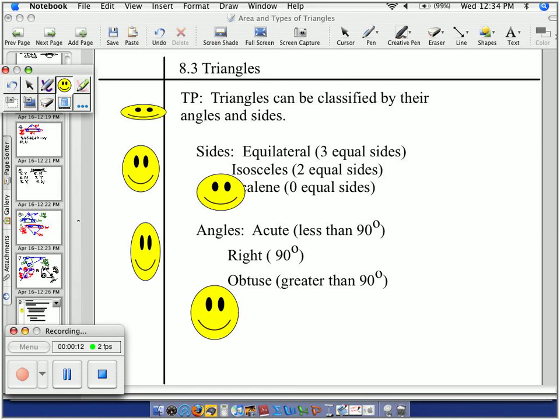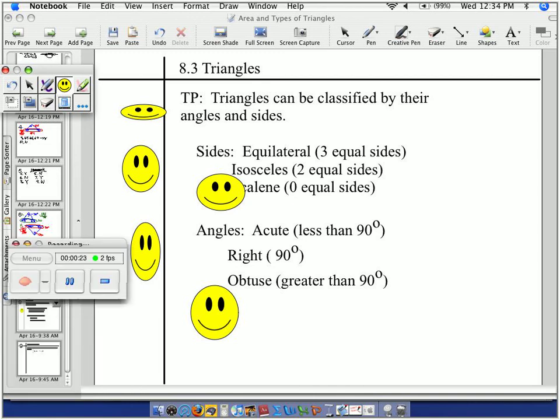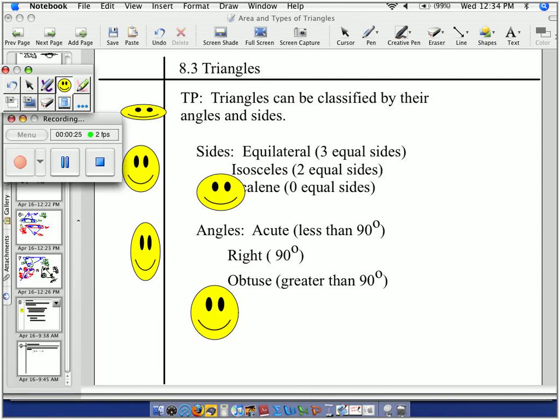What we're going to do today is look at triangles, and triangles can be categorized into two groups. You can classify them by their angles or by their sides. So as you can see, there are some names up here that we have for sides. Very common to you guys, I'm sure. So let's get rolling.